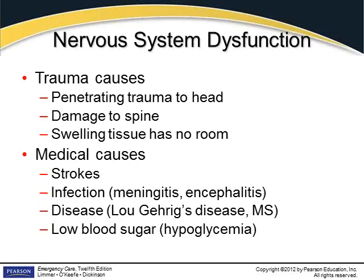All you have to do is put pressure on the cord and there may be some paralysis — maybe temporary, maybe permanent. Swelling from a back injury may put temporary pressure there. And if you have penetrating trauma to the head, such as a gunshot wound, the tissue destroyed by that bullet tumbling through the brain is destroyed permanently.